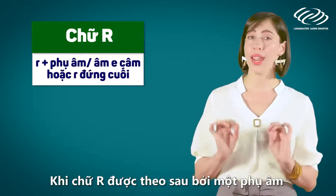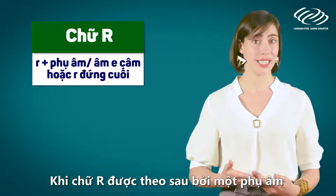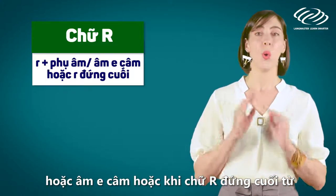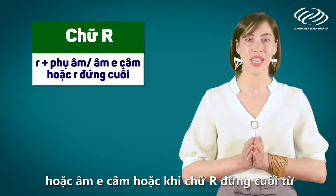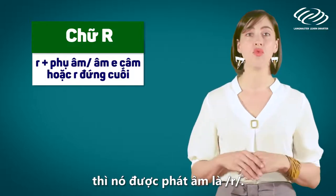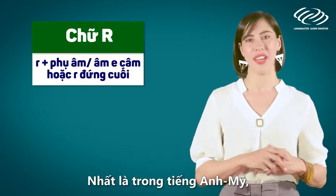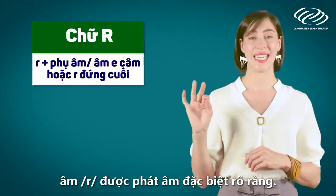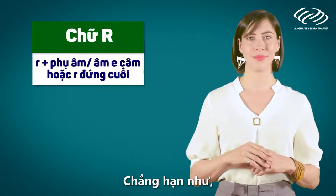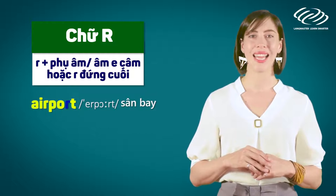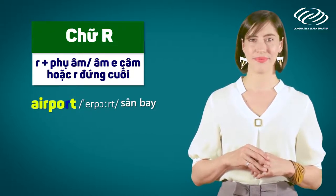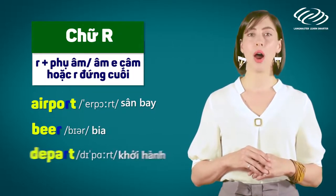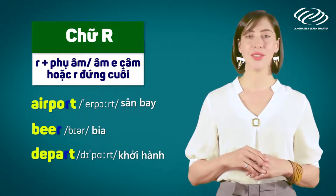When R is followed by a consonant, or a silent E, or when the R is at an ending position, it is pronounced as /r/ — especially in American English, the sound R is pronounced clearly. For example: airport, beer, depart.